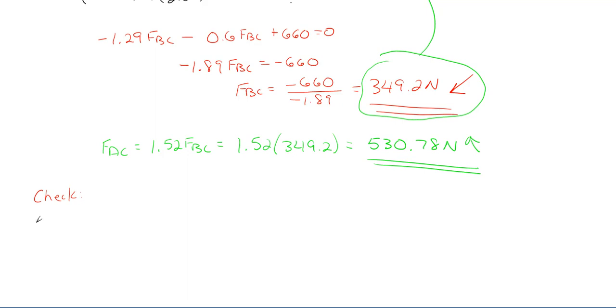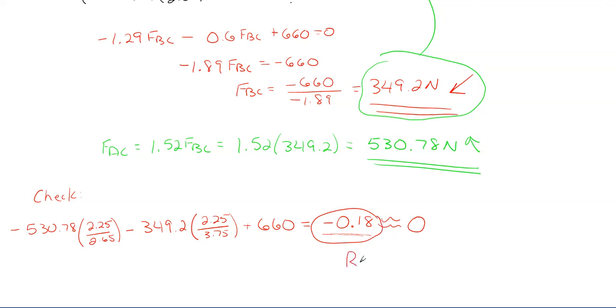If I just check the work here, and this is plugging into the FX equation, I would have minus my FAC, which is 530.78 times the ratio of 2.25 over 2.65 minus FBC, which is 349.2 times its ratio of 2.25 over 3.75 plus 660 newtons. And it comes out to be minus 0.18, which is very, very close to zero considering how large these values are. We have 349, 530, 660. So the ratio of this 0.18 over these large values is very, very small. And this difference right here is just due to rounding from our answers. As long as it's in the ballpark and close to zero, you're fine.